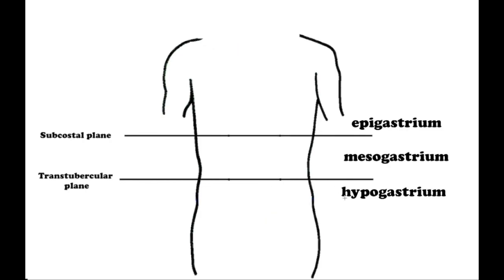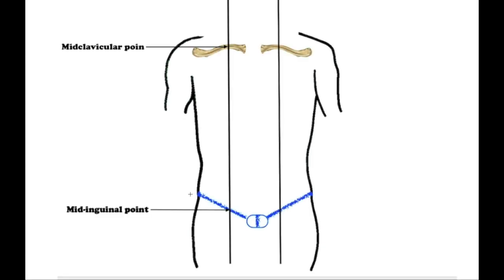The horizontal planes divide the abdominal wall into three parts: the upper part of the abdomen, the epigastrium; the middle part of the abdomen, the mesogastrium; and the lower part of the abdomen, the hypogastrium.